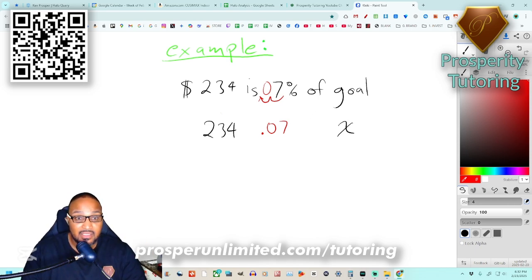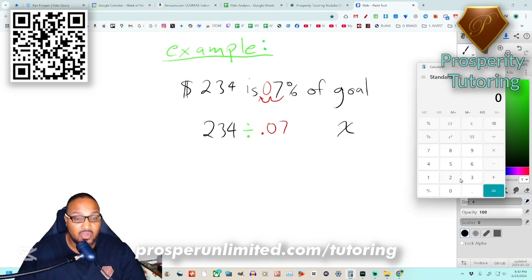In our calculator we're gonna take that two hundred thirty-four dollars and this time we're gonna divide it by seven percent or point zero seven and this is gonna tell us how much our goal should be.